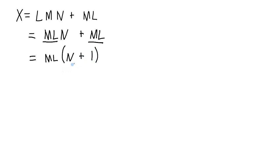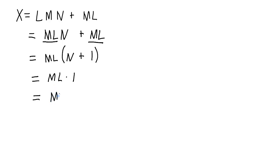Any time that you OR something with a 1, you're simply left with 1. So this will be ml ANDed with 1. Any time you AND something with 1, that's just going to be that something. So ml ANDed with 1 will simply be ml.